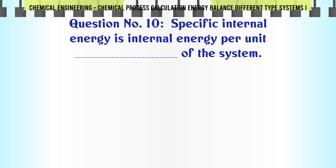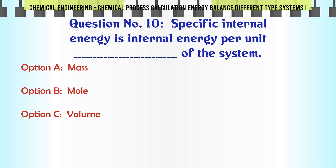Specific internal energy is internal energy per unit of the system: A. Mass. B. Mol. C. Volume. D. None of the mentioned.